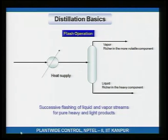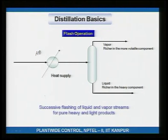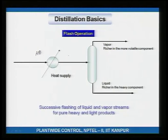Let us look at distillation basics. Say you have a feed stream that is a mixture of two components A and B, where A boils at a lower temperature than B, so A is more volatile. Both are volatile, but the volatility of A is greater than B. You heat and partially vaporize this stream, then draw out the vapor and liquid. If it starts as a 50-50 mixture, you get a 60-40 vapor richer in A.